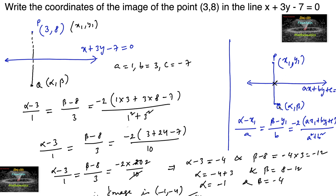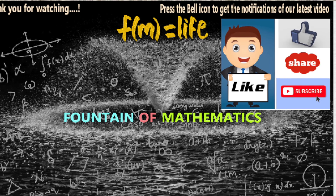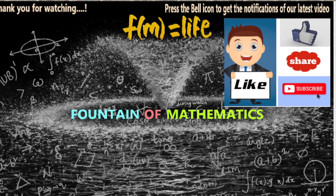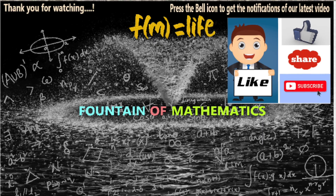Alternatively, instead of using this formula, you can also solve by taking the midpoint concept. The midpoint of P and Q lies on the line, so take the midpoint of (3, 8) and (alpha, beta), substitute into the line equation x plus 3y minus 7 equals 0, and also use the slope concept. You will get two equations — solve them and you will get the same answer. Please like, share, subscribe, and support us. Thank you.